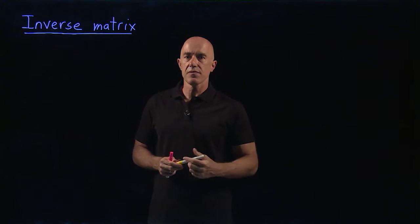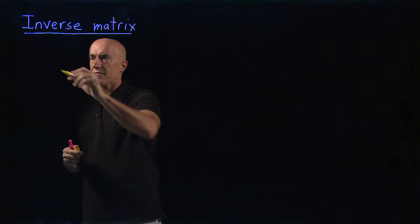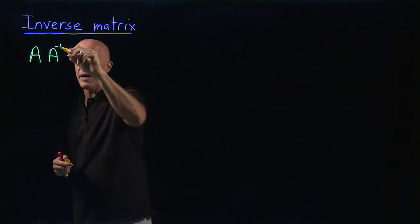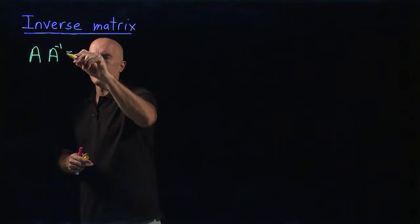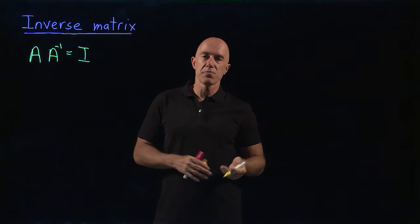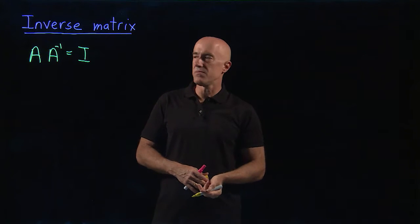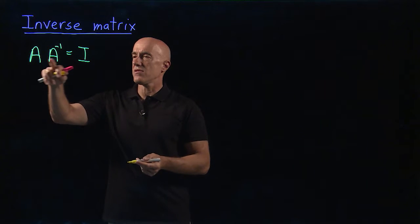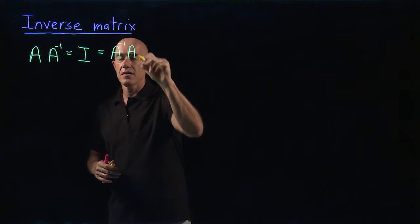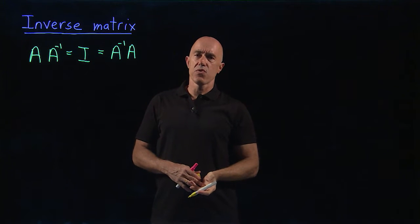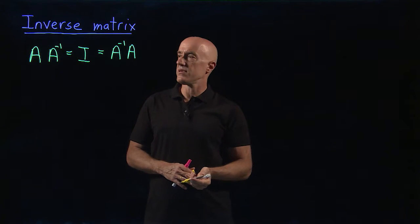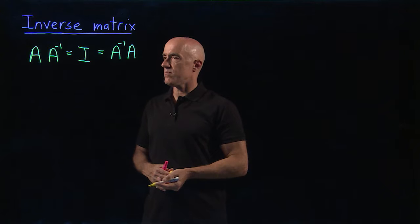So if a matrix is invertible, then we can write that A times its inverse, which we denote as A to the minus one, is equal to the identity matrix. So it's like the multiplication inverse for numbers. And it doesn't matter the order that you write this. So this is the same as A inverse A. A has to be a square matrix, n by n, a square matrix. And as I said, not all matrices are invertible.